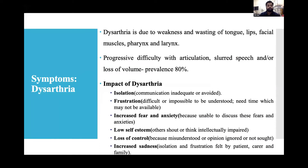Dysarthria is due to weakness and wasting of tongue, lip, facial, pharyngeal, and laryngeal muscles — causing progressive difficulty with articulation, slurred speech, and loss of volume, with a prevalence of up to 80%. Patients feel isolated due to inadequate communication, frustrated, fearful, and anxious because they cannot express their concerns. They suffer low self-esteem as others may think them intellectually impaired, loss of control when misunderstood, and increased sadness.